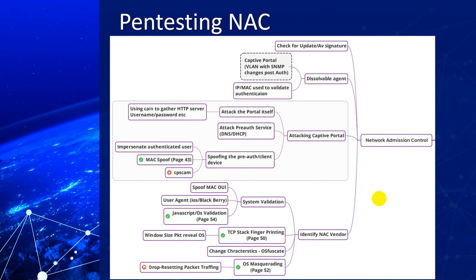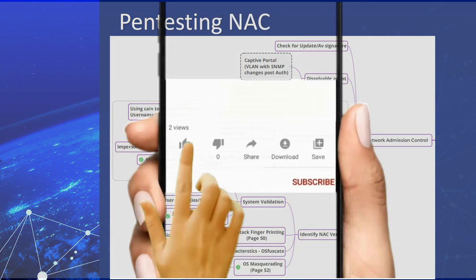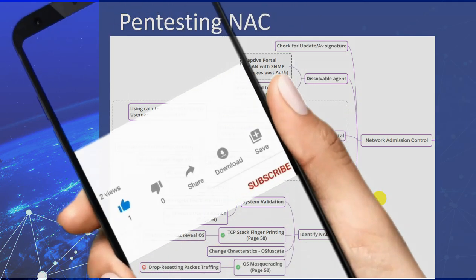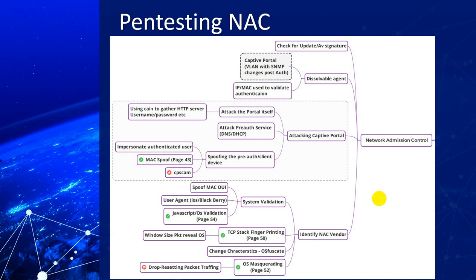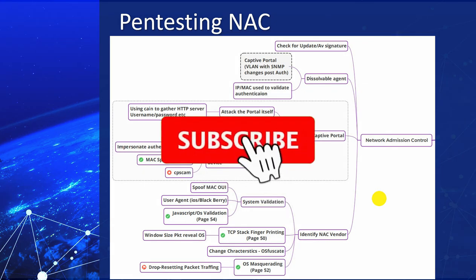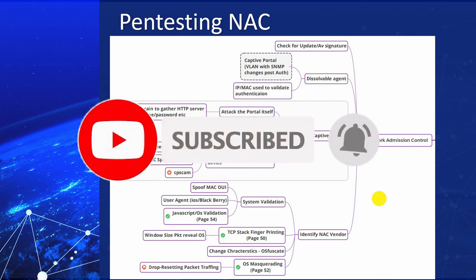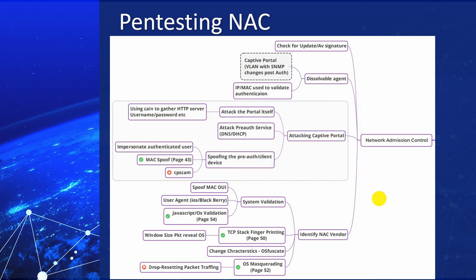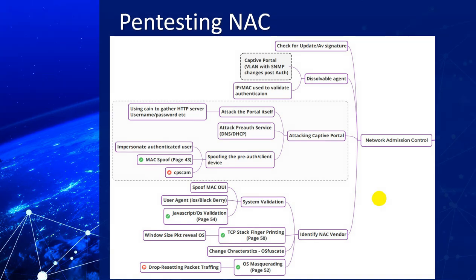You might have seen this scenario at airports or railway stations — whenever you try to connect to a Wi-Fi connection, it gets connected but later asks for an OTP on your mobile number, then allows you to access the internet for 30 minutes or maybe one hour. Similarly, in colleges and hostels, you'll find a Wi-Fi network that asks for a coupon code or student credentials to access the internet for a limited time period. That exactly is a NAC, or Network Admission Control, scenario.